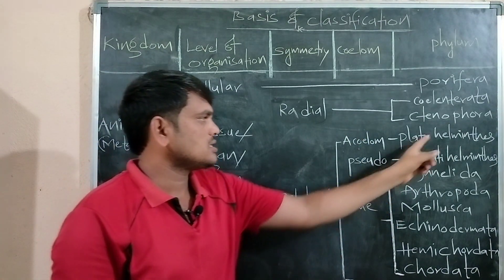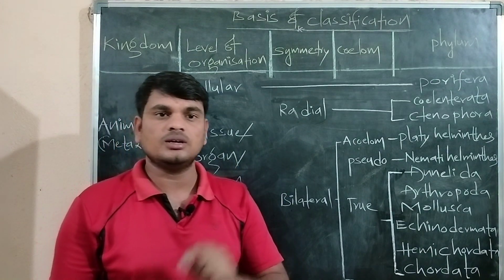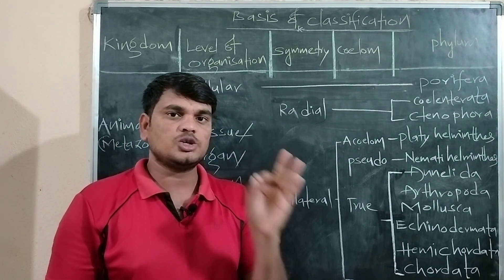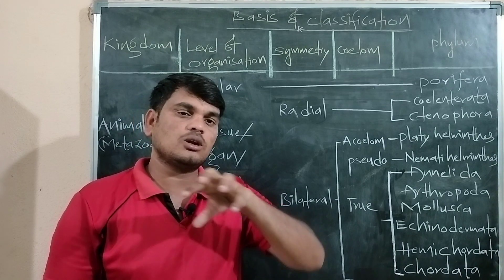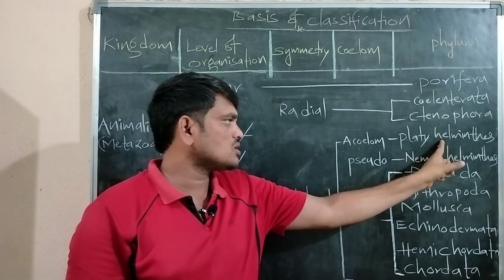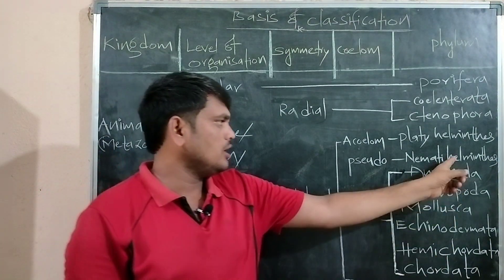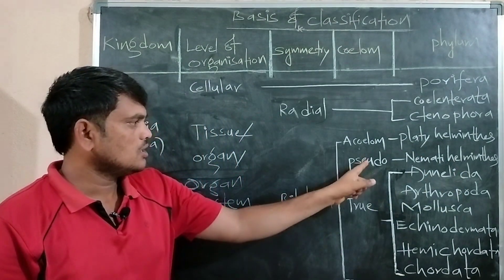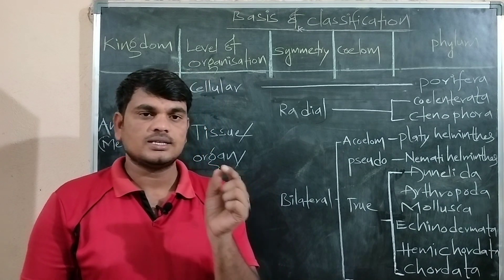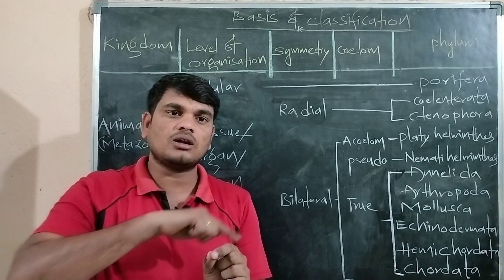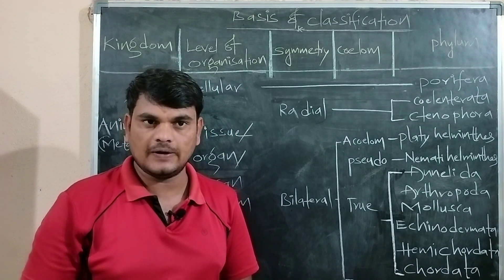Next, Platyhelminthes exhibit acoelomate condition — coelom is absent. Between the ectoderm and endoderm, mesoderm tissue is present; any space is totally filled with tissue, so there is no coelom. Nematoda exhibits pseudocoelom — coelom is present but it is not lined by a mesodermal layer, so it is not clearly visible.